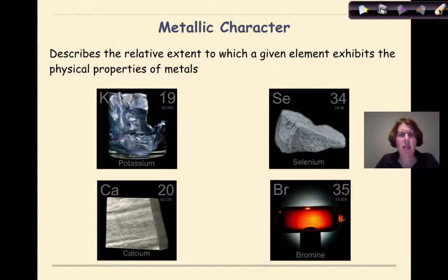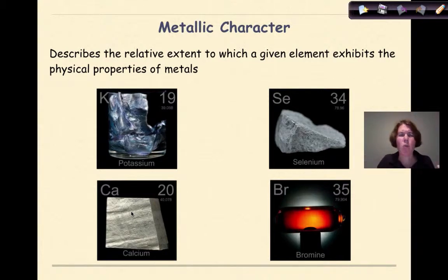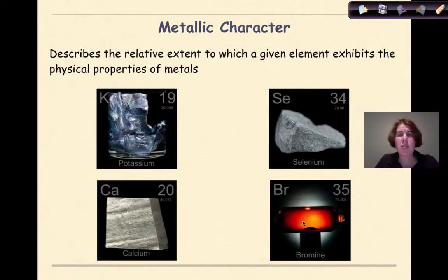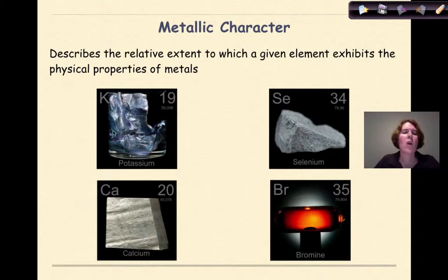Now let's talk about the concept of metallic character. Metallic character describes the relative extent to which a given element exhibits the physical properties of metals. Potassium and calcium, for example, have luster, are malleable, ductile, and conduct electricity — potassium is so soft you could cut it with a knife. Compare that to selenium, a non-metal that would shatter if struck with a hammer, is brittle, lacks luster, and cannot conduct electricity. Bromine is a non-metal gas at room temperature — not malleable, not ductile, and won't conduct heat or electricity. So selenium and bromine have low metallic character, while potassium and calcium have high metallic character.